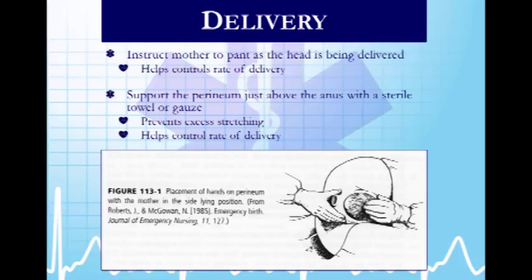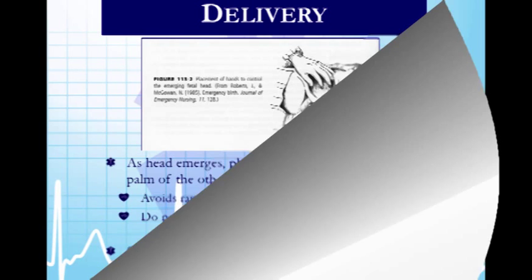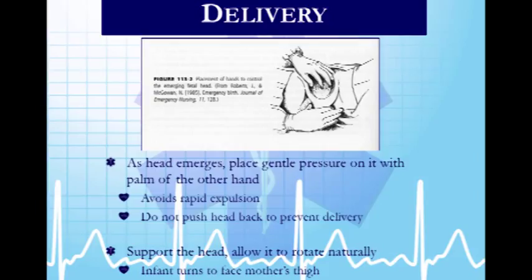Infants usually deliver themselves following a natural progression. If mom pants as the head is being delivered, it helps control the rate and slows it down. The assistant supports the perineum to prevent bulging or tearing, controlling the rate without stopping the delivery. Place one hand on the head as the baby emerges to guide it out and avoid rapid expulsion.